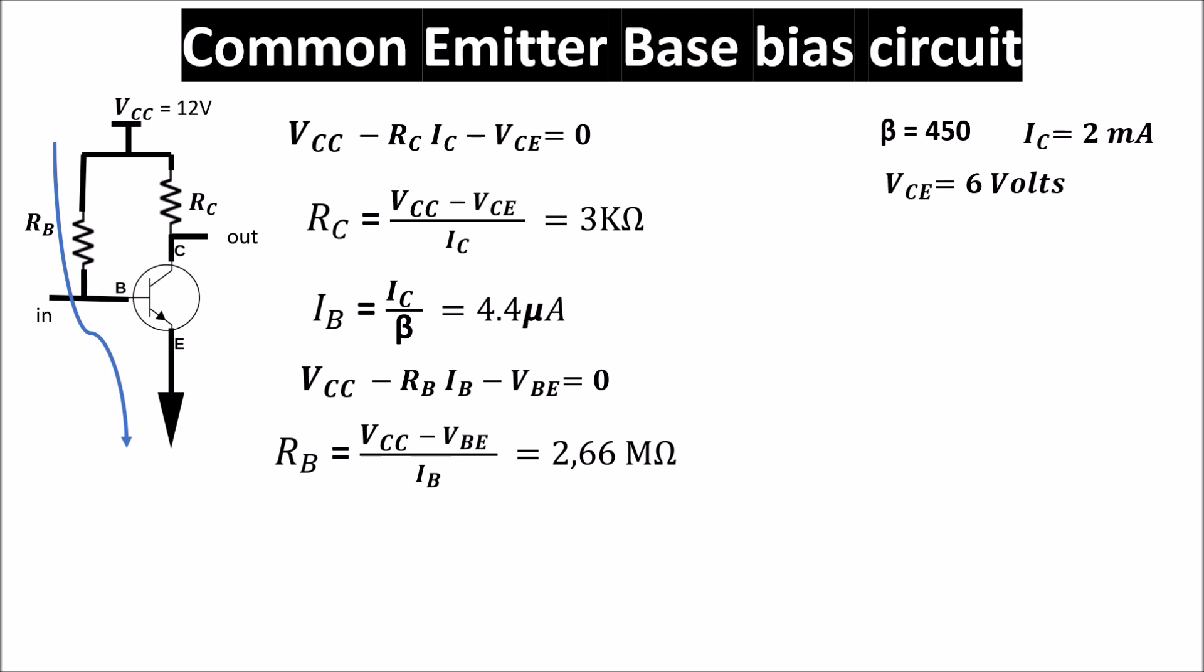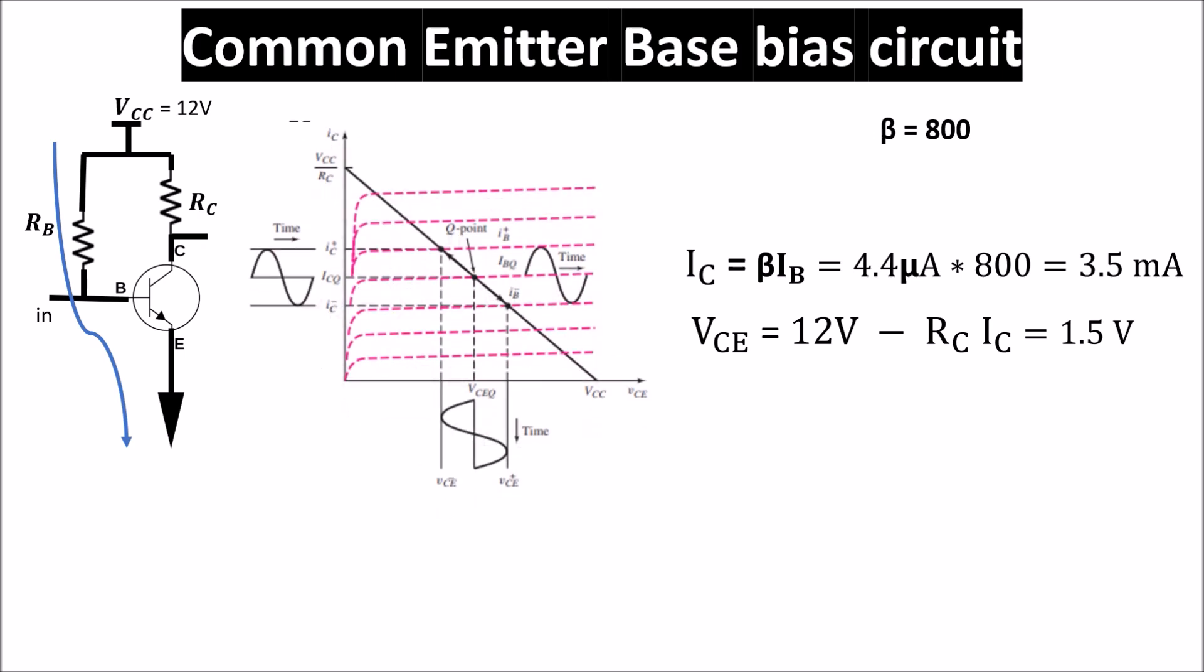We see the output can swing of some volts up and down. If the beta is really 450, everything is okay. But we don't know exactly the beta value. So we can check what happens for beta 800 for example. First we see that once we choose RB as 2.66 mega ohms, IB has to stay at 4.4 microamps. It cannot change. But if beta is 800, our new IC will be 800 times IB, so 3.5 milliamps. If IC is 3.5 milliamps, VCE is 1.5 volts. So in the IC VCE diagram we really move from here in the middle of the active region to here at the border of the saturation region.